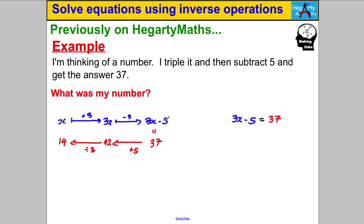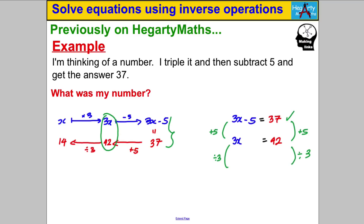It's really useful to write each line of working. Going backwards, I add 5 to both sides of my equation: 3x − 5 + 5 gives 3x = 42. Then I divide both sides by 3 to get X = 14. Check it: triple 14 gives 42, subtract 5 gives 37. Done — your number is 14.